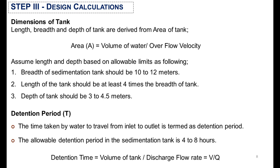In step 3, we calculate the dimensions of the tank. Length, breadth, and depth are derived from the area of the tank using the following allowable limits: the length of the sedimentation tank should be 10 to 12 meters, the length should be at least 4 times the breadth, and the depth should be 3 to 4.5 meters. The detention period — the time taken by water to travel from inlet to outlet — has an allowable limit of 4 to 8 hours and is calculated by this formula.